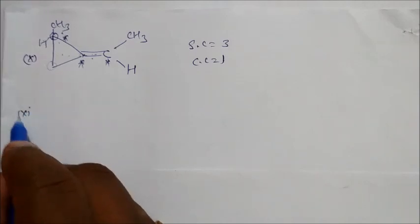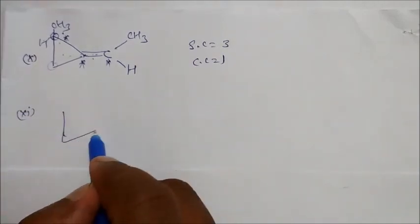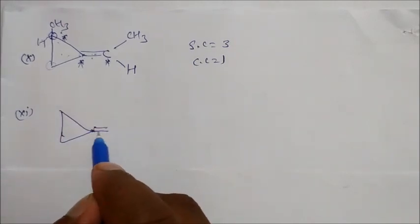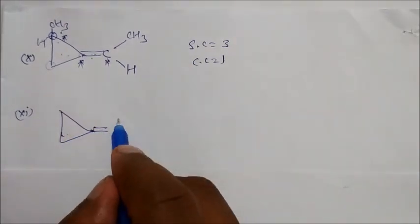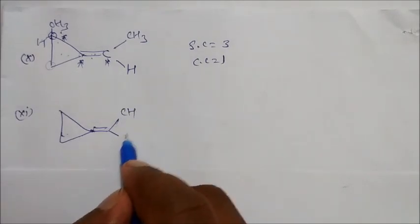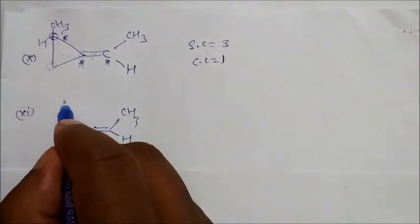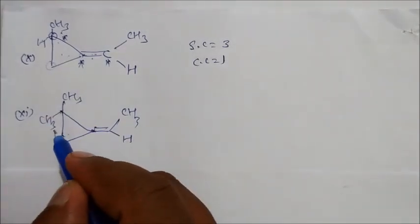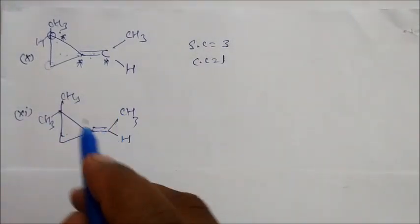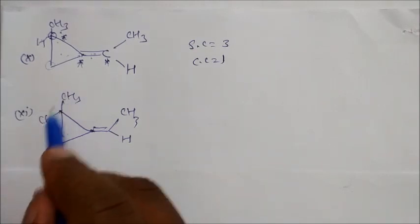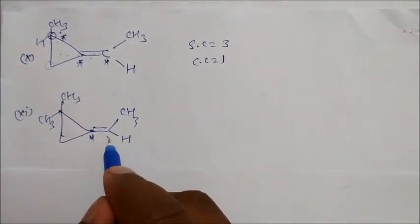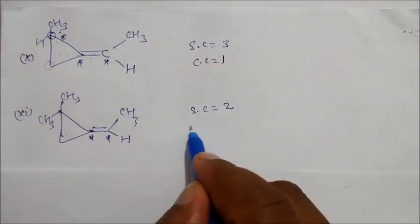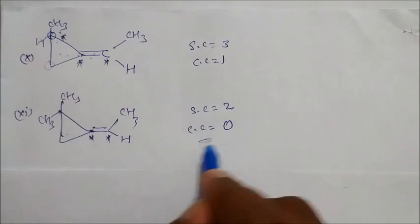Let us take the next question. So let us draw the structure. This is the cyclopropane, and again CH3 here, hydrogen, and another CH3. Now let us check stereocenters. There is no stereocenter at the central carbon. Here we have one stereocenter and here we have one stereocenter. So stereocenters in this case will be two, but chiral centers will be zero.